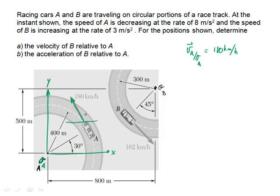Now I'm interested in what's the angle here. Here's the x-axis and the y-axis. I notice that this is 30 degrees in here. So I can draw a line where that's 30 degrees, but if this is a right angle, then that is 60 degrees. This line is perpendicular to that line, which is parallel to the velocity. So this must be 30 degrees, and 90 plus 30 is 120 degrees. So the velocity of A relative to its origin is 180 kilometers per hour at an angle of 120 degrees.